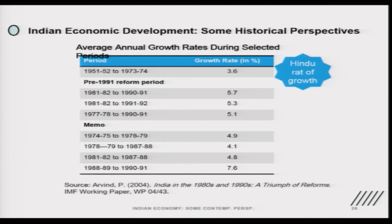There is one more important term often read in economic papers — the 'Hindu Rate of Growth.' Referenced from Arvind Panagariya's IMF working paper on India in the 1980s and 1990s, it was observed that from 1951-52 to 1973-74, India's annual growth rate did not exceed 3.5 percent. At that time, Raj Krishna coined the term, noting that since 3.5 percent seemed like a norm — almost like an 'Om' — it was called the Hindu rate of growth.